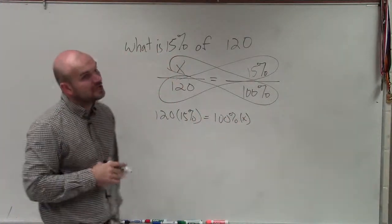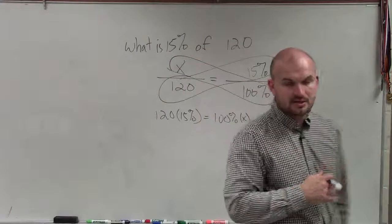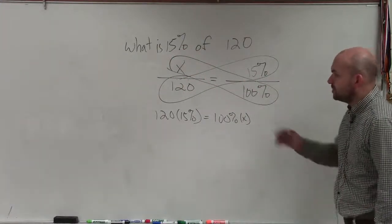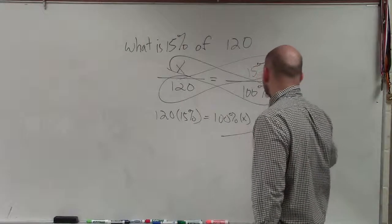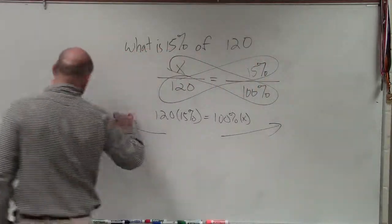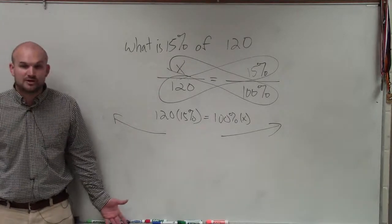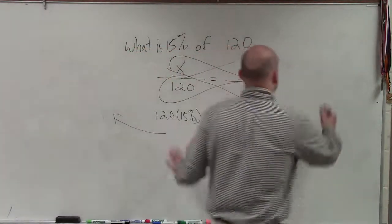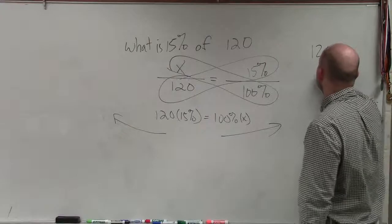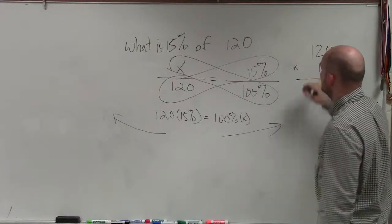So basically, what I'm doing is multiplying 120 times 15% is equal to 100% times x. Now, ladies and gentlemen, there's a couple different ways that we can go ahead and do this. We can multiply these as whole numbers. So I'll do one way this way and one way this way. And basically, it really kind of depends on what you are most familiar with. One way is just to multiply 120 times 15.